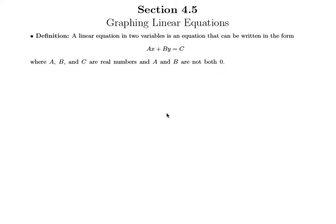And that is we've limited ourselves to looking at what we call linear equations. And so what is a linear equation? Well, a linear equation in two variables is an equation that can be written in the form Ax plus By equals C, where A, B, and C are just numbers.